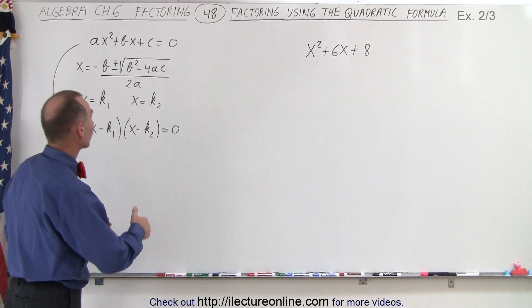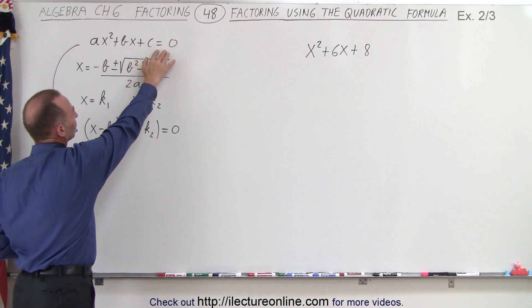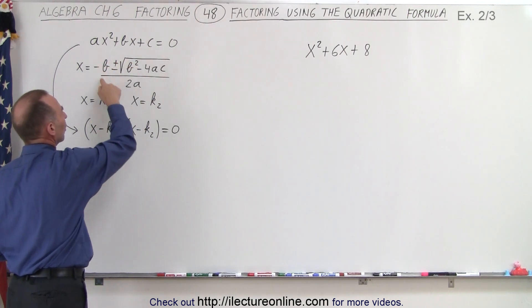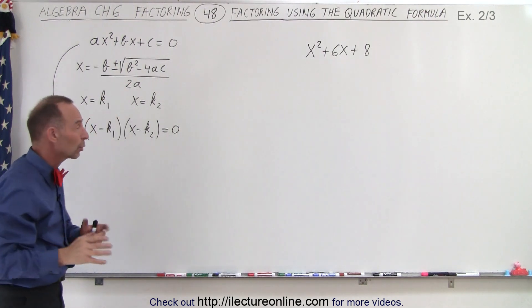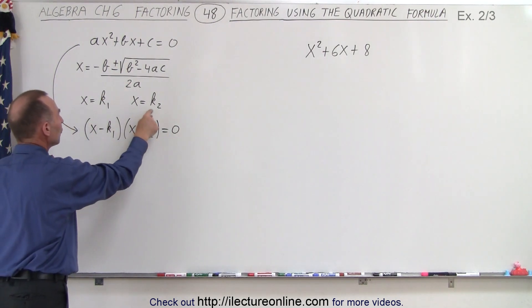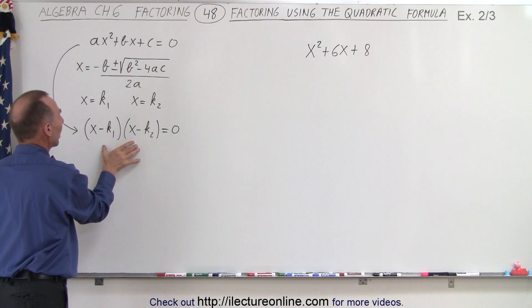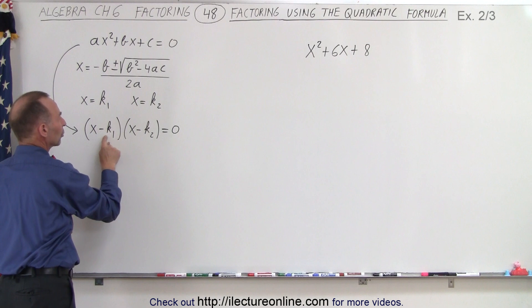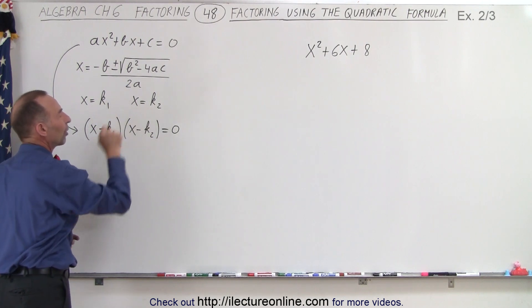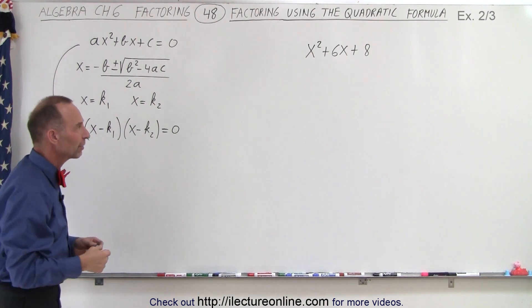We're going to imagine that it's actually a quadratic equation. We're going to ignore the equal zero and solve for the two values of x that will solve the equivalent quadratic equation. We will get two values for x, and then we can write the original trinomial as the product of two binomials where the numerical coefficients here are the negatives of the two values that we found for x.